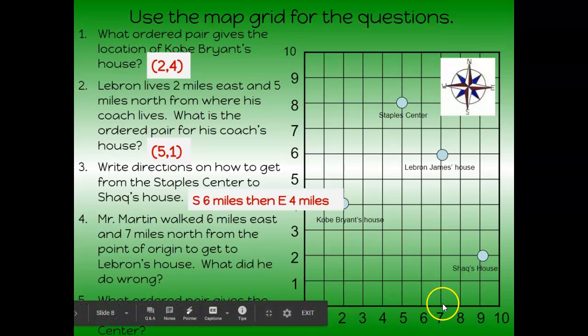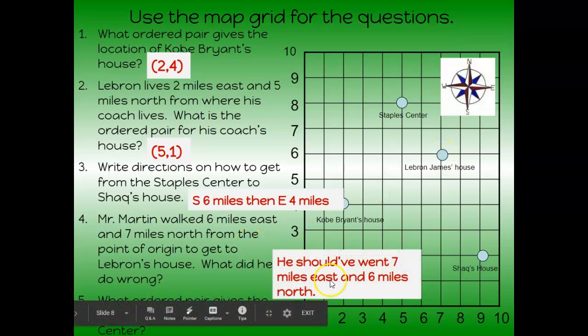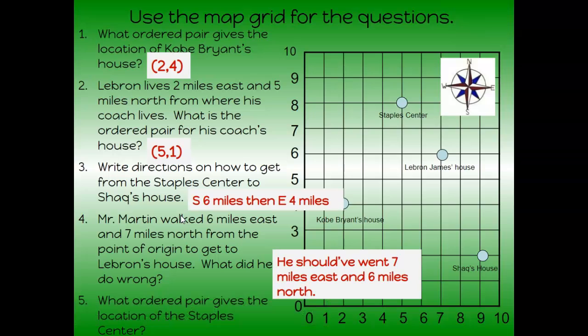LeBron's house is at seven, six. Oh, so he should have went seven miles east and six miles north. He went the opposite direction, or he flipped his ordered pair and he went the wrong way first.